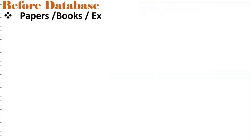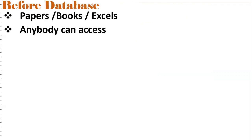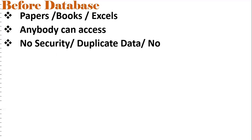Before databases, data was stored in the form of papers, books, and Excel files, so anybody could access it. If data is stored on paper, anyone can access it — there is no security, there can be duplicate data, and there is no backup. These are the drawbacks of storing data before databases.